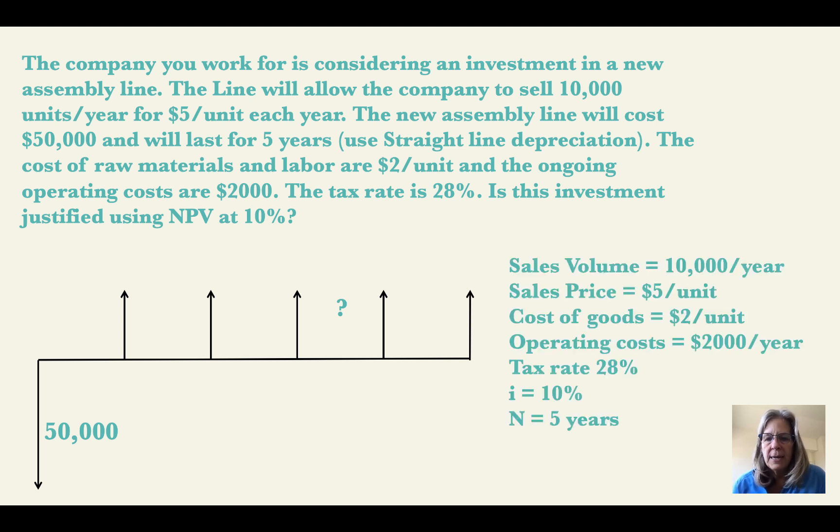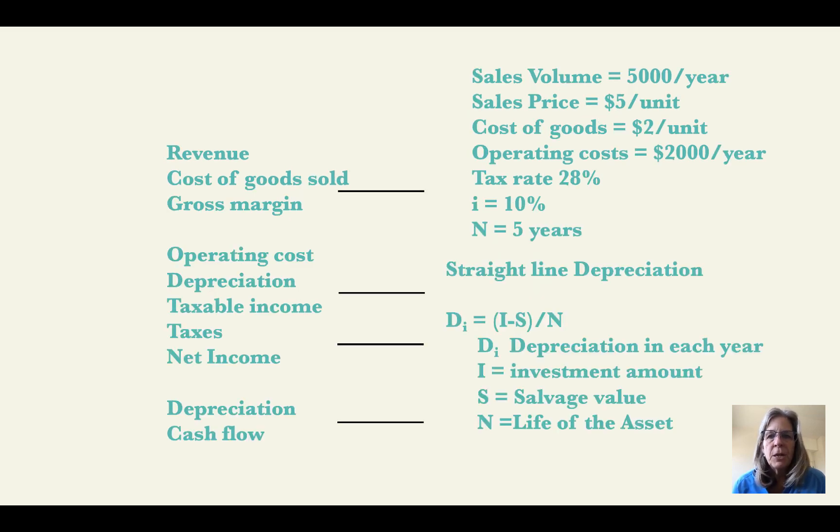So I took all that data here and I put it: 10,000 units, $5 a unit sales price, $2 unit cost of goods, operating expenses 2,000 per year, tax rate, interest rate, and life. So I'm going to go ahead and put these values in here. The first thing I'm going to do is calculate depreciation. I'm using straight line, so I use the equation for straight line that's right there. I have no salvage value, so I just take the 50,000 and divide it by five and it's $10,000 per year.